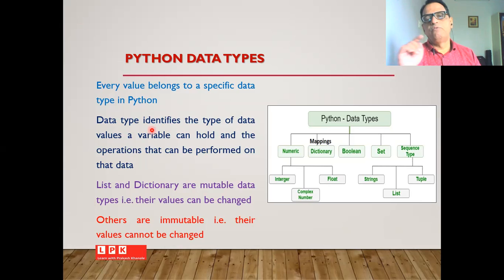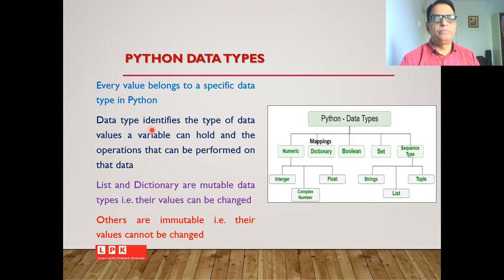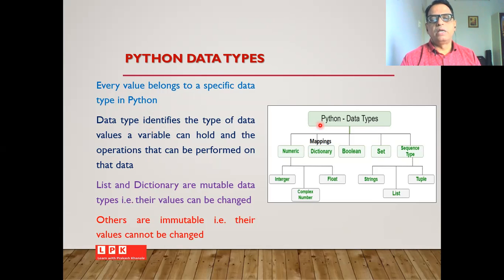Whenever we make use of variables within a program, we need to assign certain values to these variables. What kind of values can be assigned will be decided by the data type of that variable. Also, what kind of operations we can perform on these data values will also be decided by the type of the data. From this chart one can easily find that there are a large number of data types available in Python.